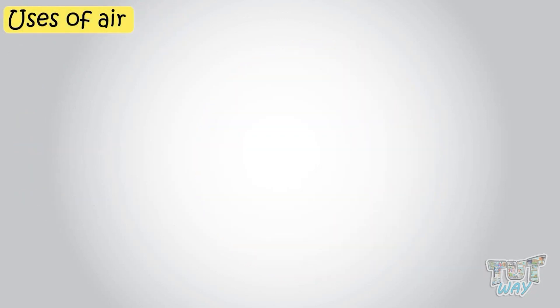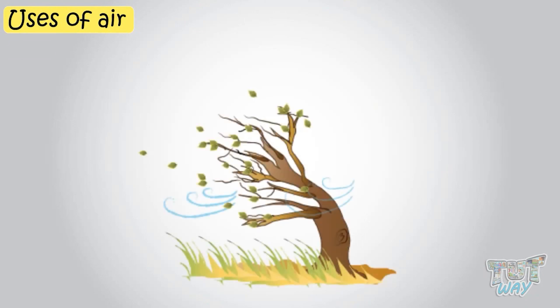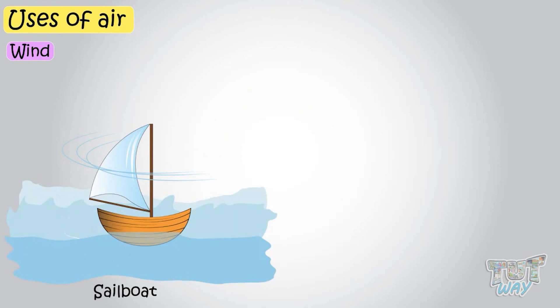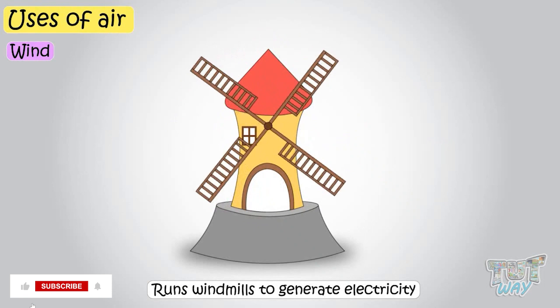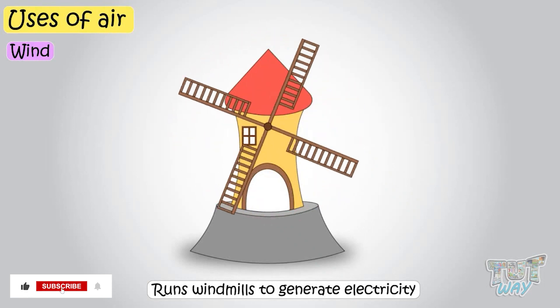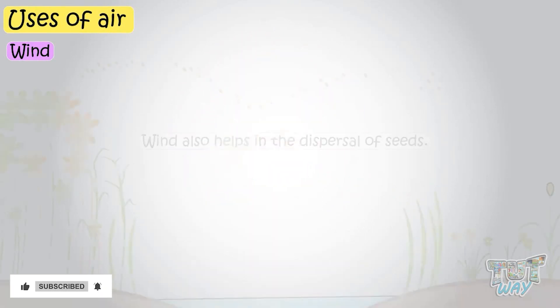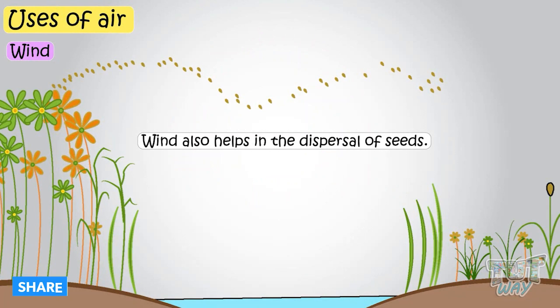Now let's see some uses of air and how air is important for us. Moving air, that is the wind, has great force. It enables the movement of sailboats and gliders. It runs windmills which are used to generate electricity. Wind also helps in the dispersal of seeds.